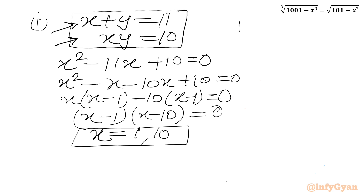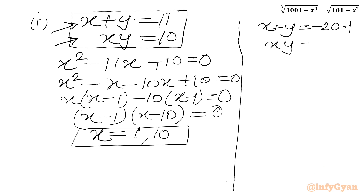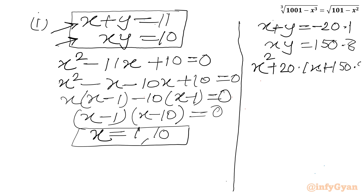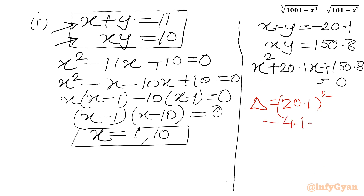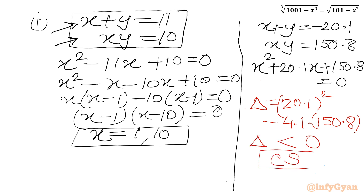Now for system 2: x plus y equals negative 20.1 with xy equals 150.8. Framing the quadratic: x square plus 20.1x plus 150.8 equals 0. Let us check the discriminant: delta equals 20.1 squared minus 4 times 1 times 150.8. This is approximately 400 minus 600, which is negative. So the discriminant is negative — complex solutions will generate. We will reject this system.